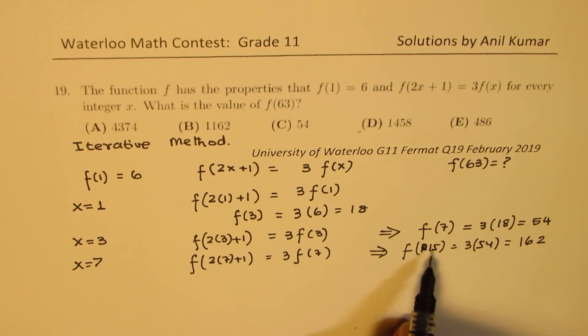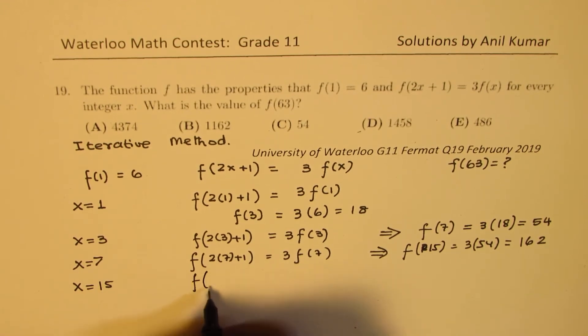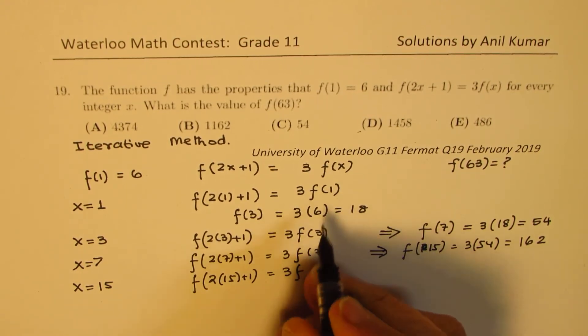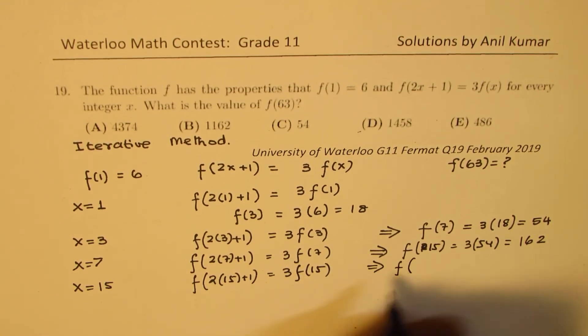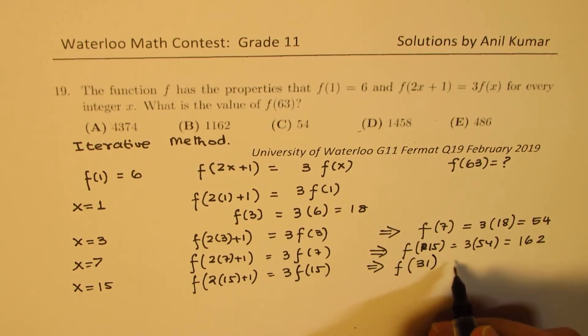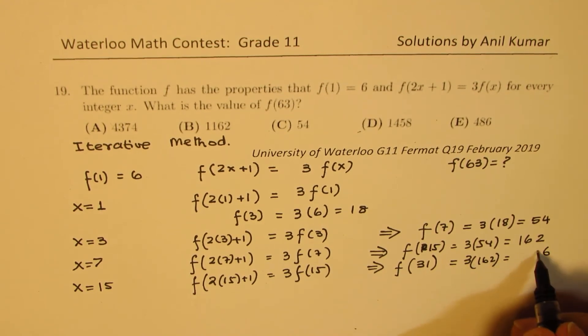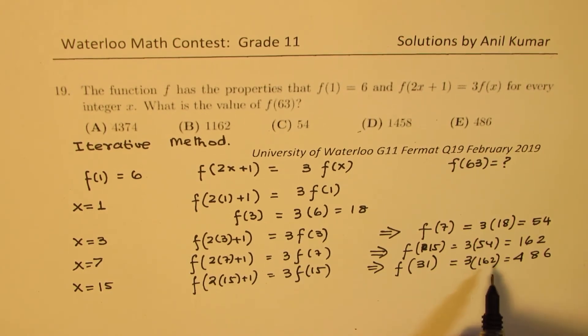Now we know what is f(15), so we can substitute x = 15. We get f(2×15+1) = 3f(15), and that will give you the value for f(31). So f(31) = 3×162. 3×2 is 6, 18 and 1, so we get 486.